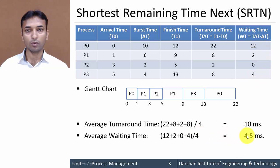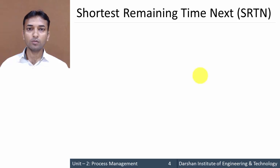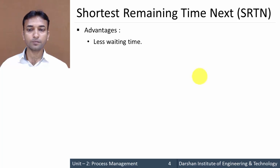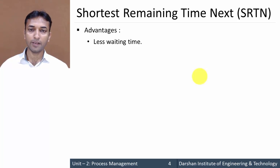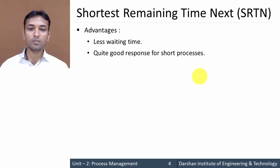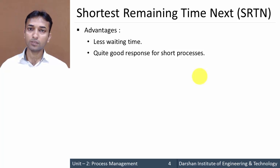The advantages of Shortest Remaining Time Next scheduling algorithm are: less waiting time — processes wait for less time compared to other algorithms — and quite good response for short processes, meaning a short process will get an immediate chance to execute. Both of these advantages are the same as those of Shortest Job First.